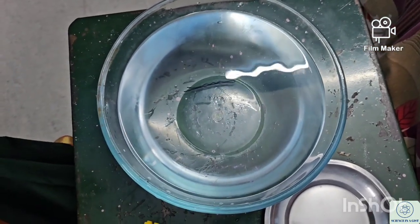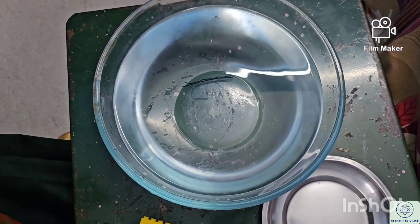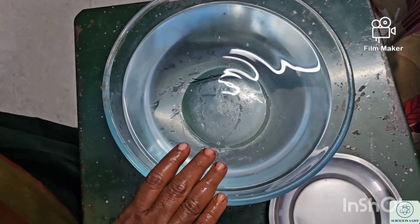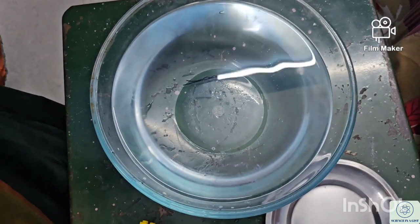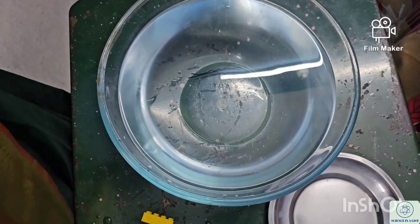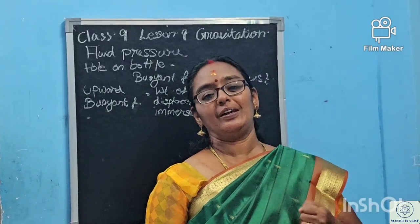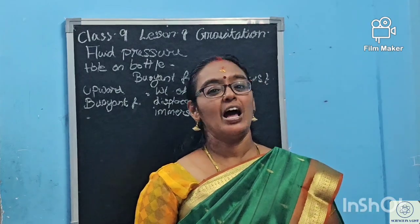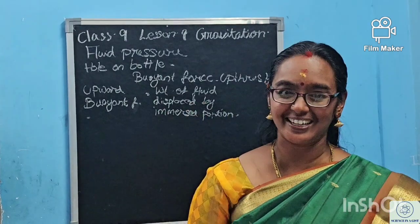What is density? Density is equal to mass divided by volume. I think the lesson is now finished, and I hope you are very happy seeing this experiment.